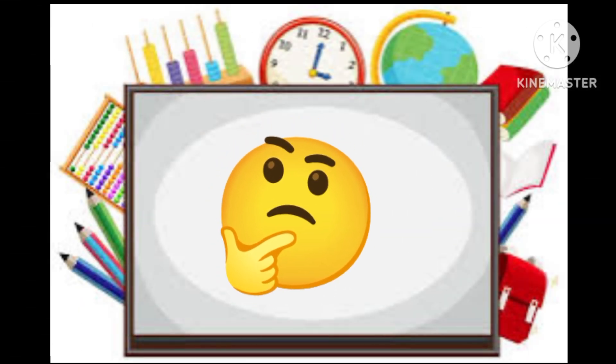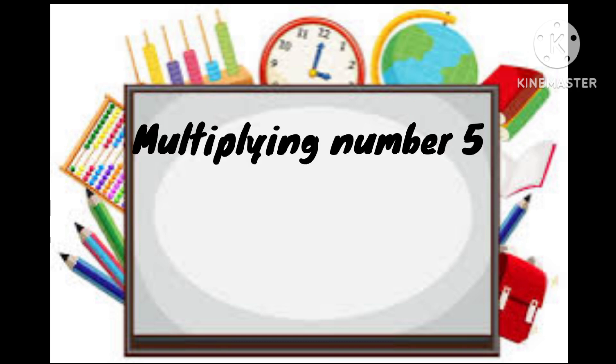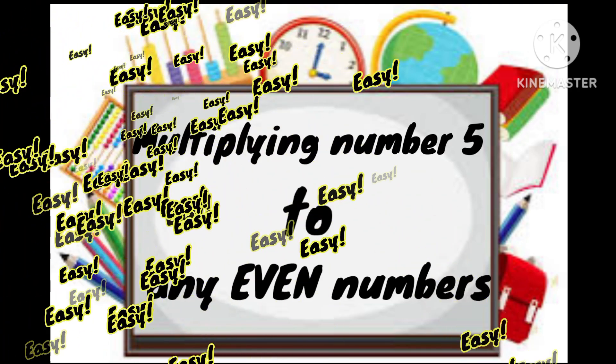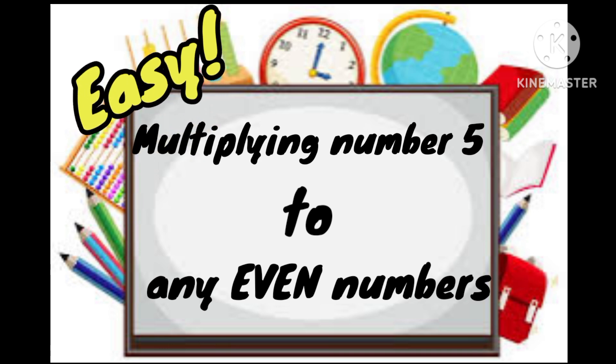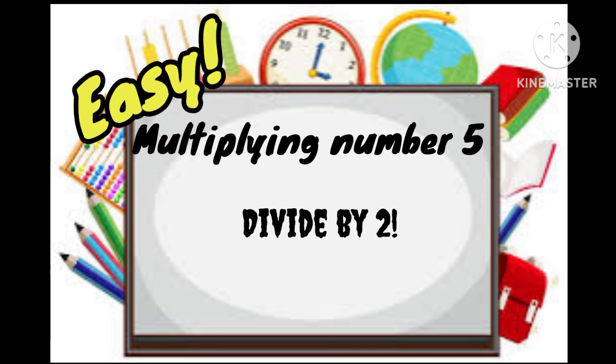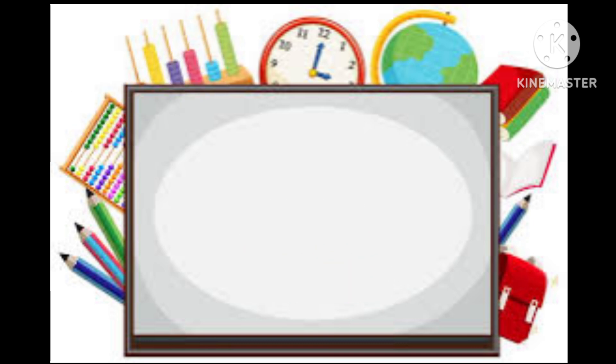So for today's video, I will share to you how we multiply 5 to any even numbers in an easy way. So instead of using the traditional method of multiplying numbers, we just need to divide the numbers by 2 and put 0 after the number.